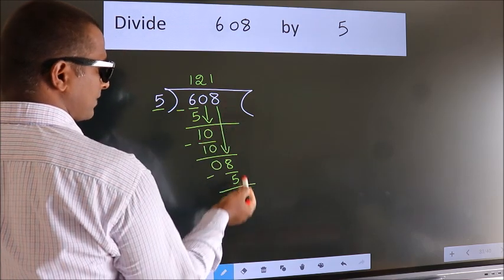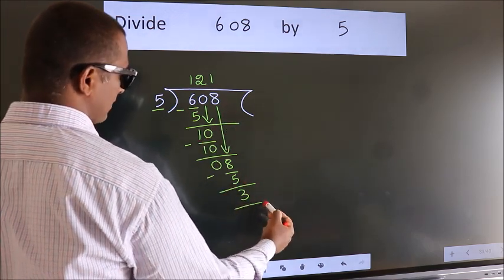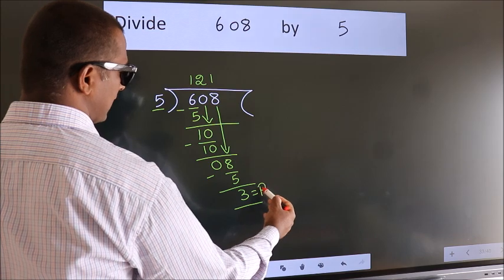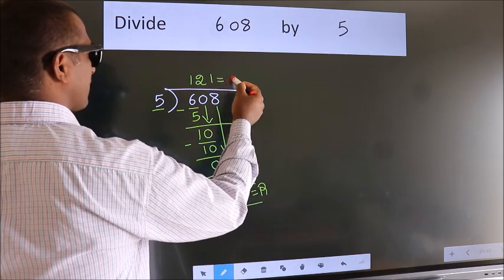No more numbers to bring down, so we stop here. This is our remainder. This is our quotient.